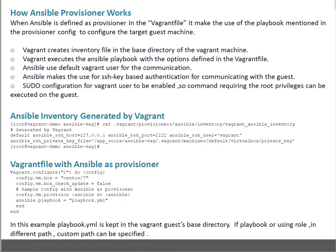How do we define Ansible as a provisioner? Basically, in the Vagrant file you do: config.vm.provision ansible. This means Ansible is now the provisioner. Then ansible.playbook equals playbook — whatever your playbook name, you define it here. Your playbook name may be webserver.yml, lamp.yml, playbook.yml — whatever name you define. After that, end — which means the provisioner configuration ends here. One question may be in your mind: where do you keep the playbook.yml file? If you don't specify any path, Vagrant considers that you have kept the playbook.yml file in the same directory where the Vagrant file exists.